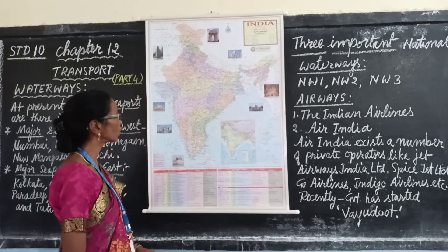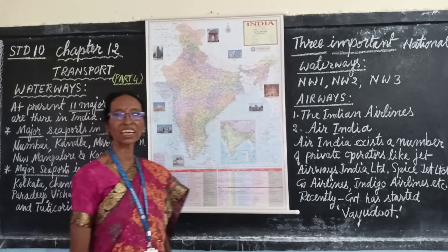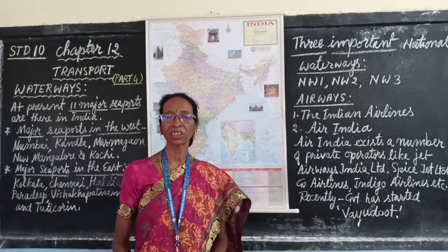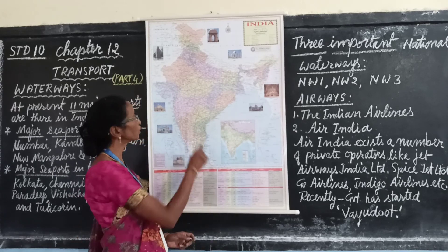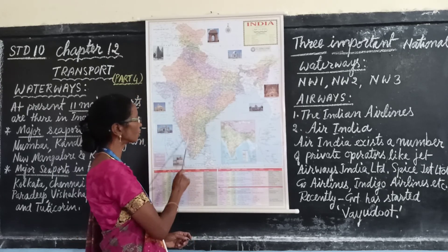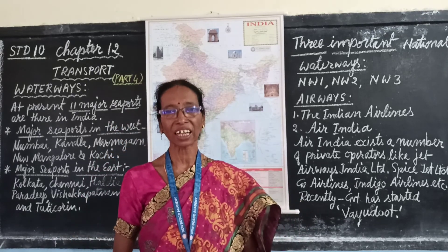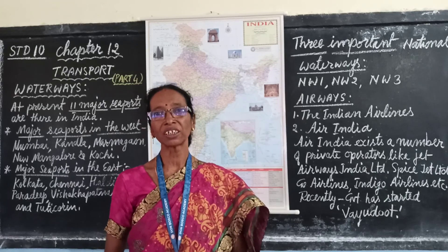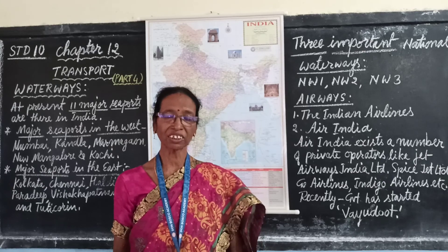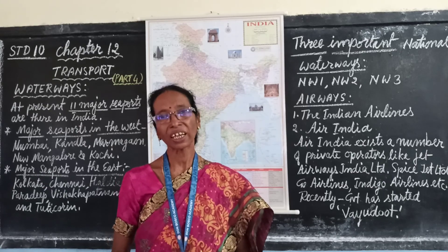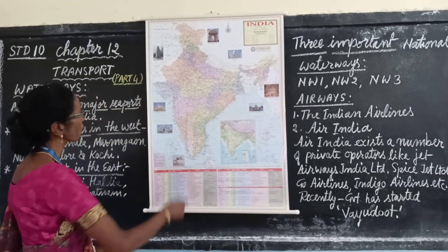In Peninsular India, only river Godavari and Krishna are navigable. Because of the Deccan Plateau region, other small rivers in Peninsular India are not navigable. They may dry up in the dry season, and because of the plateau region they form waterfalls and flow rapidly, and therefore they are not navigable.